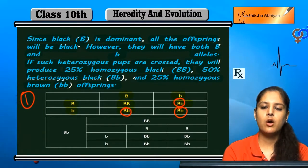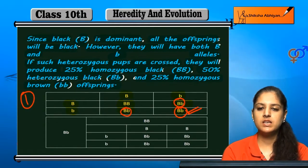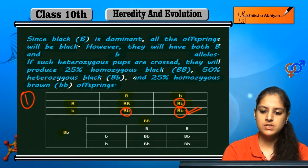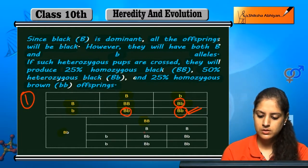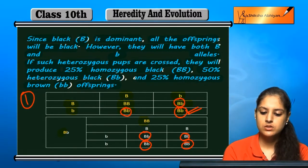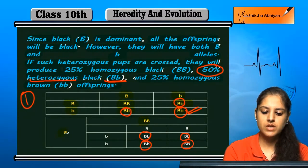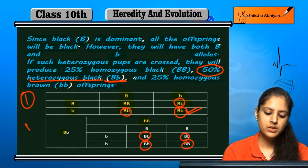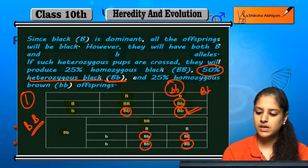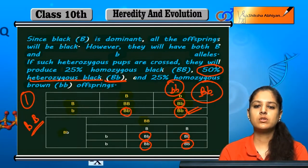So, this series is dominant. 50% of this series will be heterozygous black. Homozygous means both alleles are the same, while heterozygous means both alleles are different. In this case, we can identify the dog's coat color based on the B series genetics.